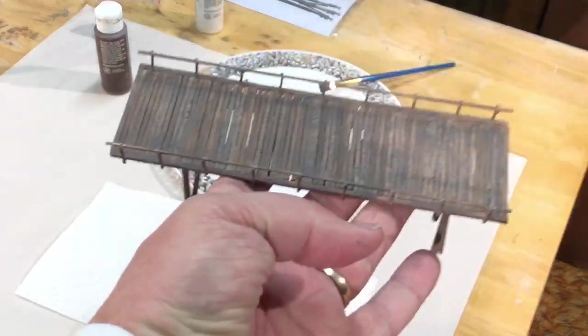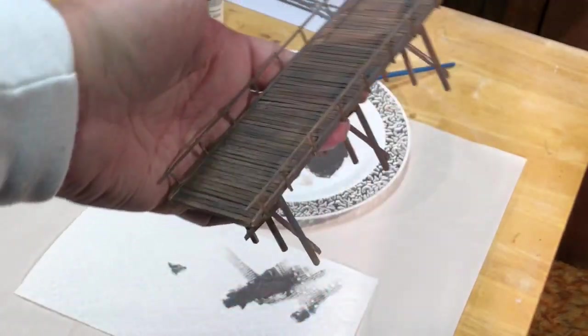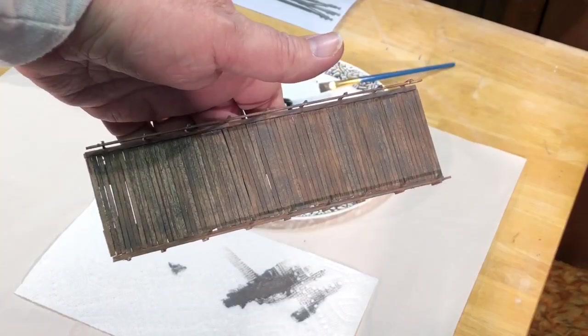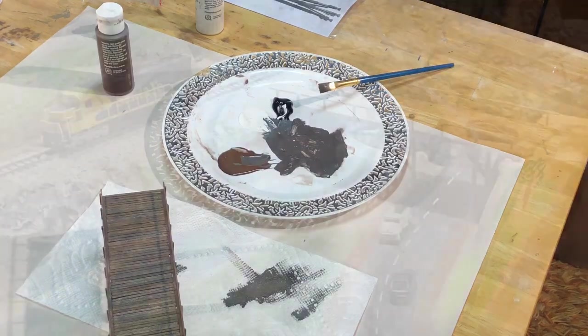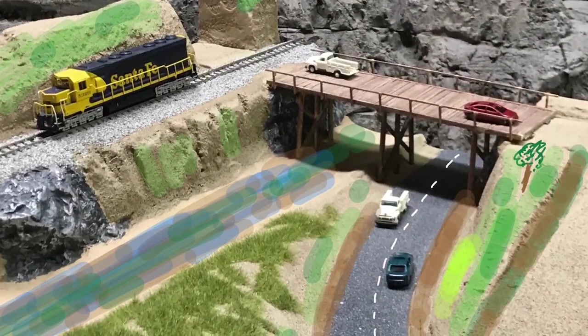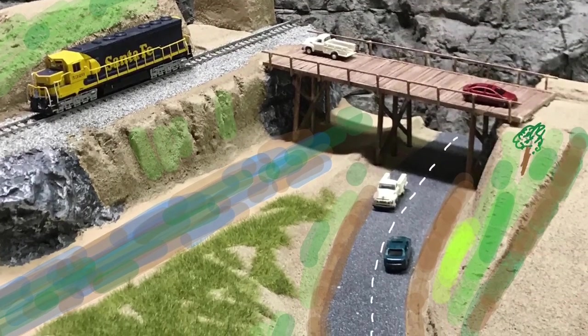Please join me again next time as I continue the series on building an N-scale diorama. Next up is the use of extruded foam and sculpt-a-mold to build the basic topography of the diorama.